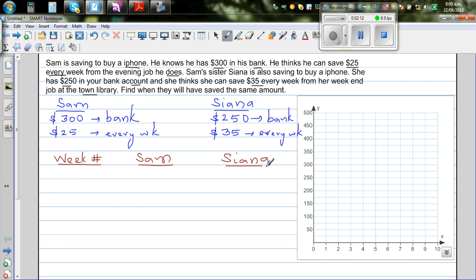We'll start with zero. Zero means when they decided to save. So suppose they started it today. When the time started, you can call that week zero. Sam has $300 and Sienna has $250.